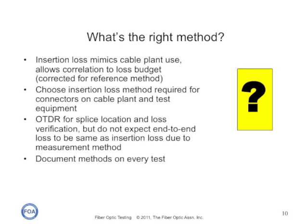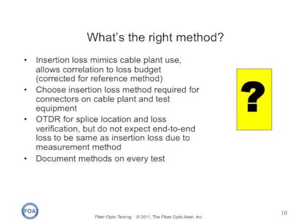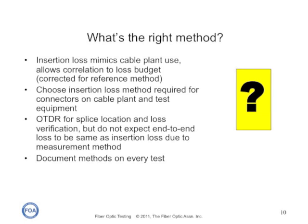So what's the right method? There really isn't one right method — each has its own use. Insertion loss mimics the cable plant use and allows correlation of your measurement to the loss budget, but you have to make a correction for the method you use for setting your 0 dB reference. If you use a two-cable reference, you'll measure one connector loss less than your loss budget, and with a three-cable reference, you'll measure two connector losses less. You choose the insertion loss method that's basically required by the connectors on your cable plant and test equipment.